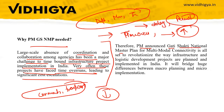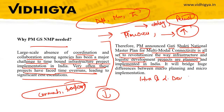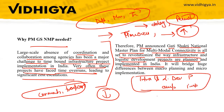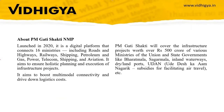PM Gati Shakti National Master Plan is set to revolutionize the way infrastructure and logistics development projects are planned and implemented. The purpose is to develop a system where infrastructure and logistics development projects are planned and implemented in India in a faster and smoother way, so there is no time overrun and no cost overrun. It will bridge huge differences between macro planning and micro implementation.